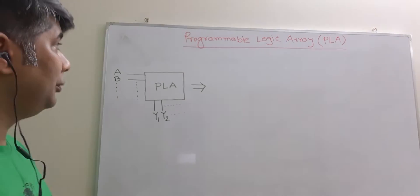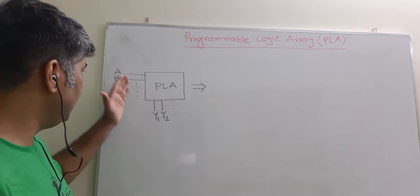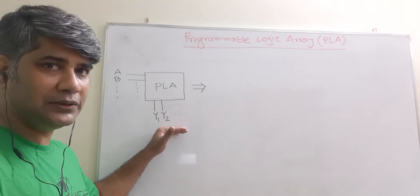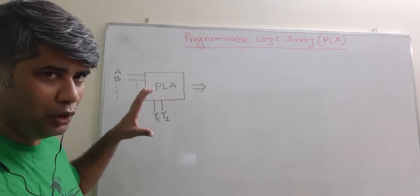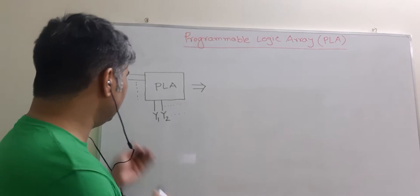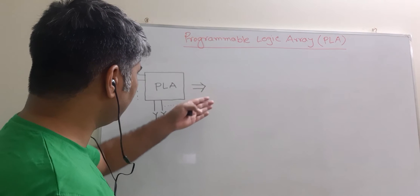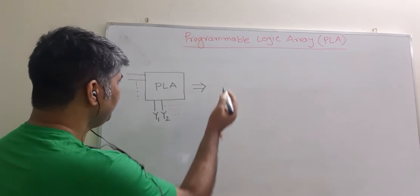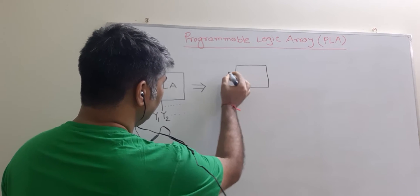Let's see what is PLA, or Programmable Logic Array. As this block diagram shows, it basically has inputs which are fixed, as well as outputs which are also fixed. Since this is a block diagram, we are not sure what is inside this box. Let's break this up step by step and see what we can find using a more detailed block diagram.